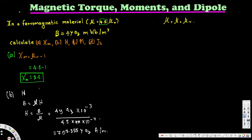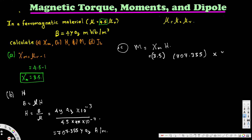For part C, M is magnetization, calculated using M equals χm times H. χm is 3.5 and H is 707.355 y az. Multiplying these gives M equals 2475.7 y az amperes per meter.